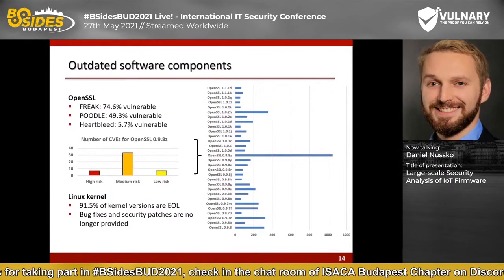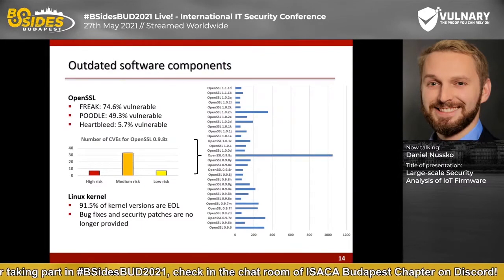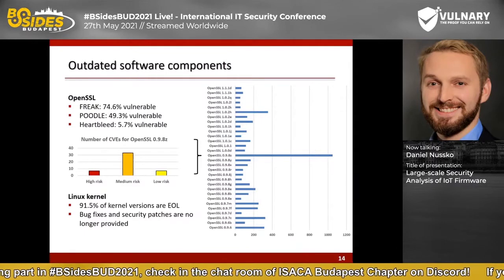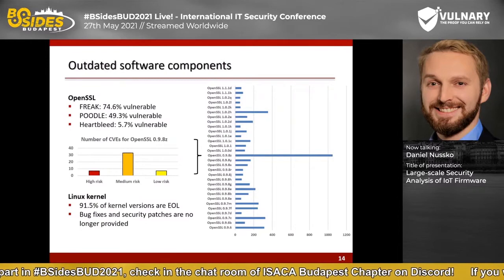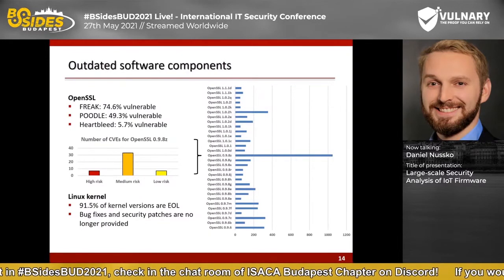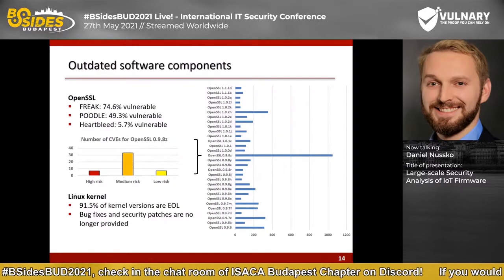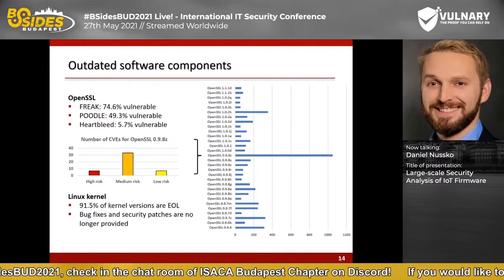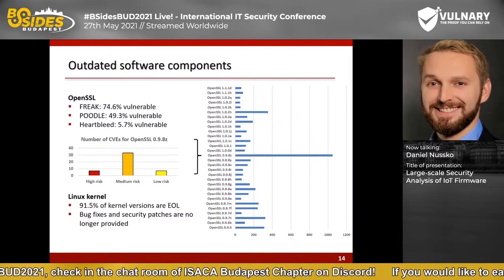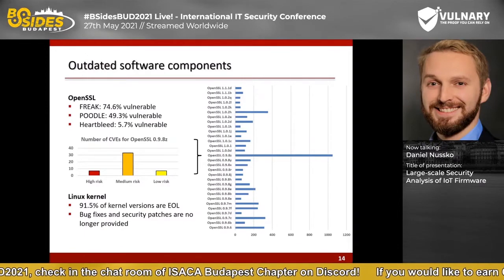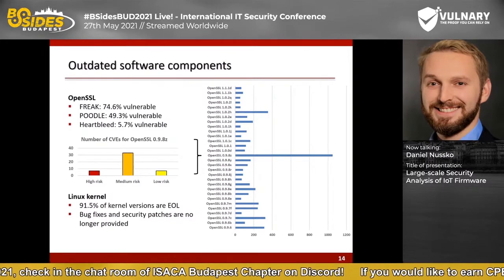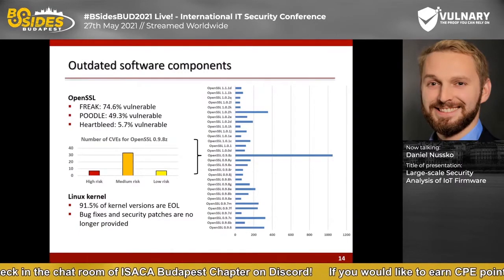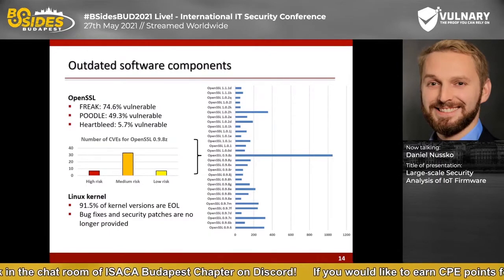Here you can see the version landscape of OpenSSL as an example — how often each specific version was identified. The complete list would be much too long, so only the most frequently used versions are shown. The extracted version information was compared with data from the National Vulnerability Database from NIST. In this way, already known vulnerabilities and their CVE numbers were identified for each version. The bar graph shows the number of vulnerabilities by CVSS score for a given version, such as OpenSSL 0.9.8.